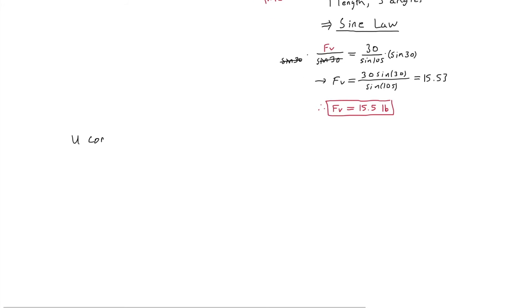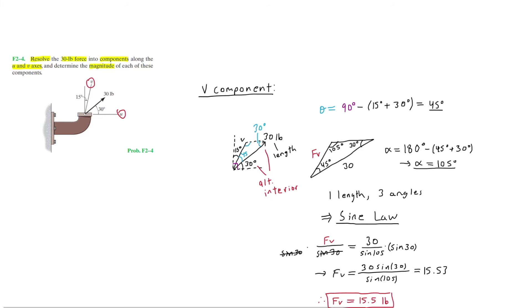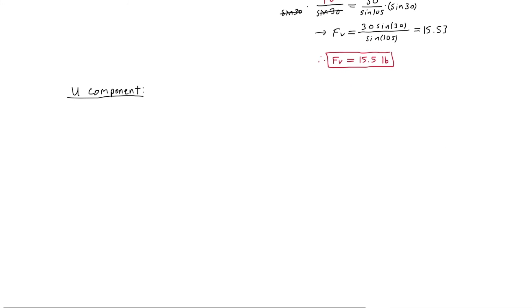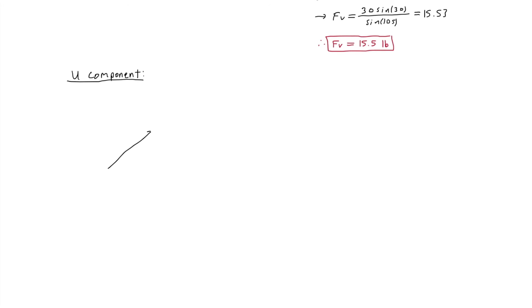Now to find the U component of the force. Looking back at the picture we can see that the force is directed 30 degrees off of the U axis. So like before we're just going to redraw the force, and now specifically the U axis. That right there is 30 degrees, and then here we also have the V axis.